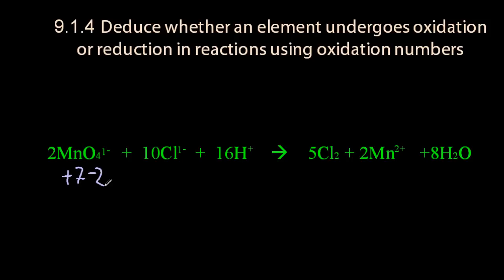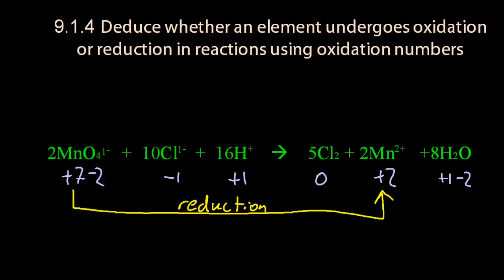Again, write in the oxidation numbers. Now, which ones have changed? Manganese has gone from 7 to 2, so it's been reduced, the number, it's gone down. So that is reduction, it's gained electrons.